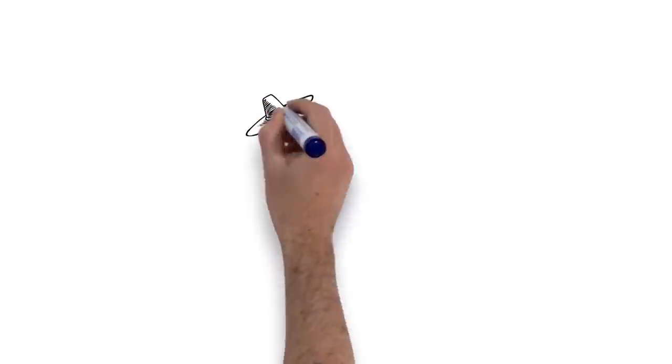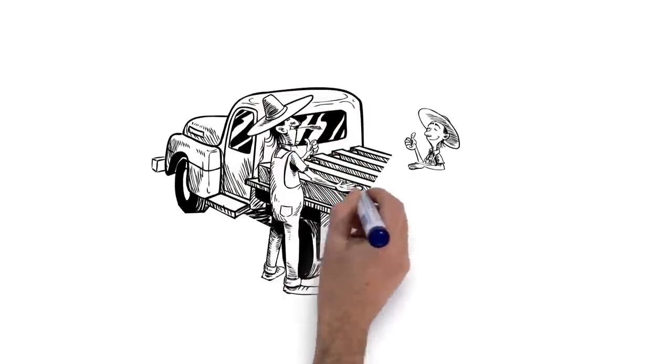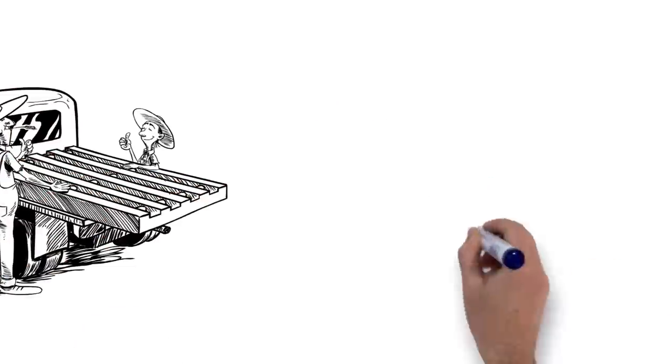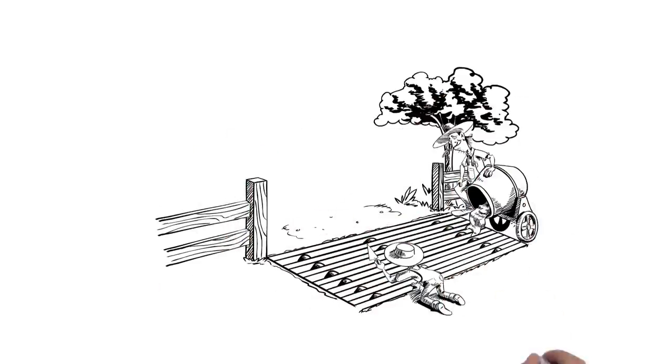Well, I'll be. You hear that, son? Bob and his son quickly set the cattle guard form in their pickup and head back to the farm. They set the form in the ground. They pour in the concrete and leave it alone.